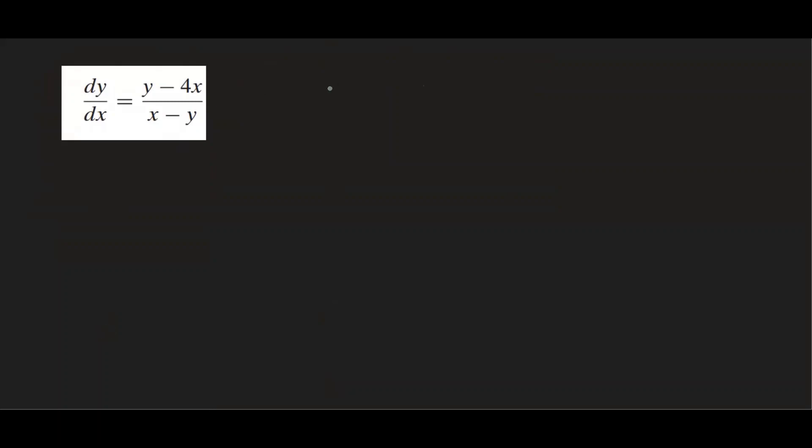The idea with this method is to introduce another variable, which is v. So we're going to let v be equal to y over x. We want to turn our differential equation into that new variable, but first we need to divide every single term by x so that it looks like y over x, and that will be substituted using v.